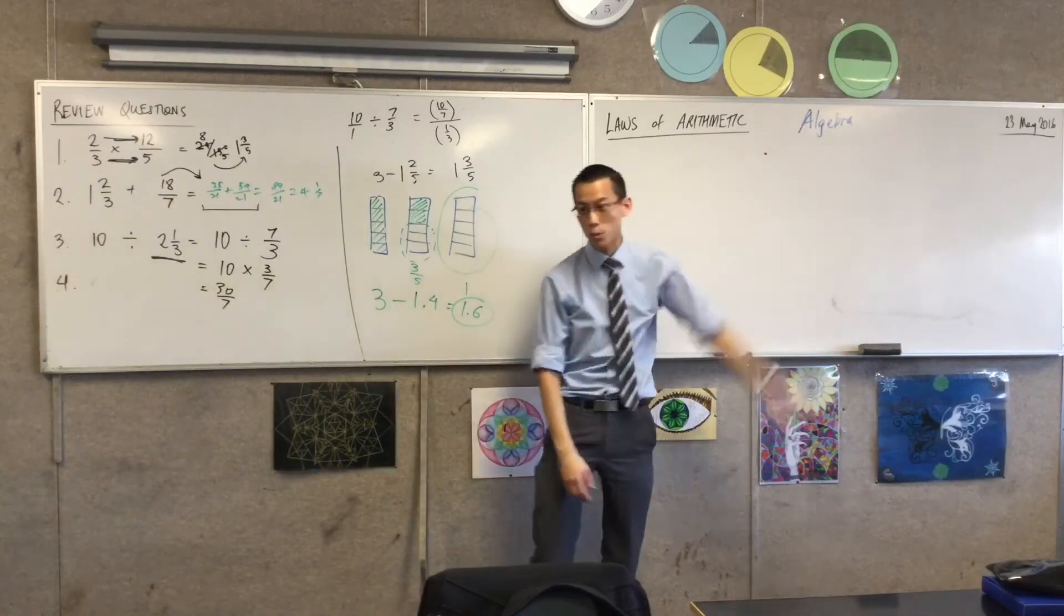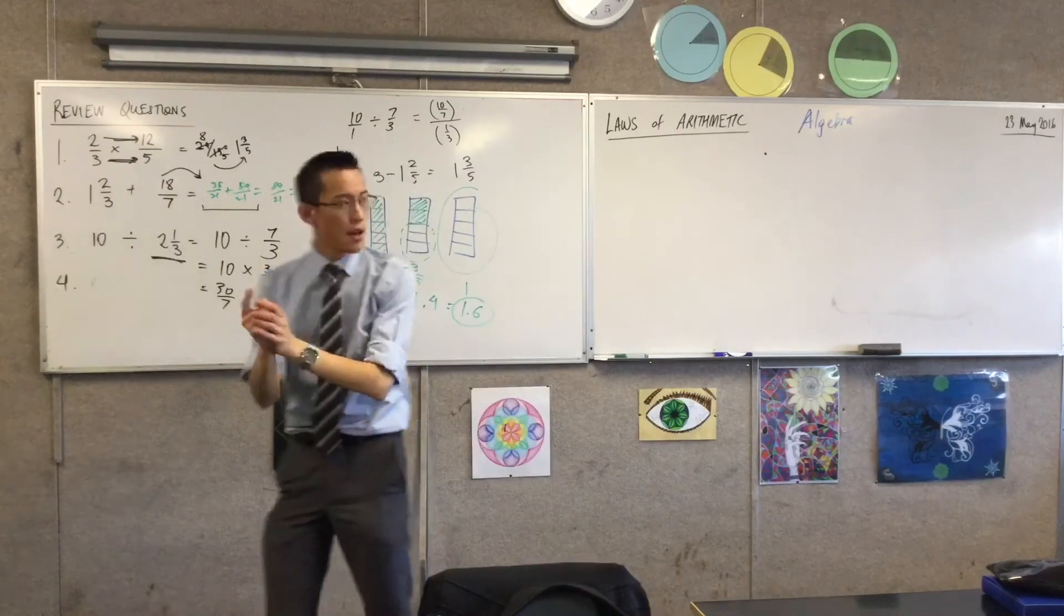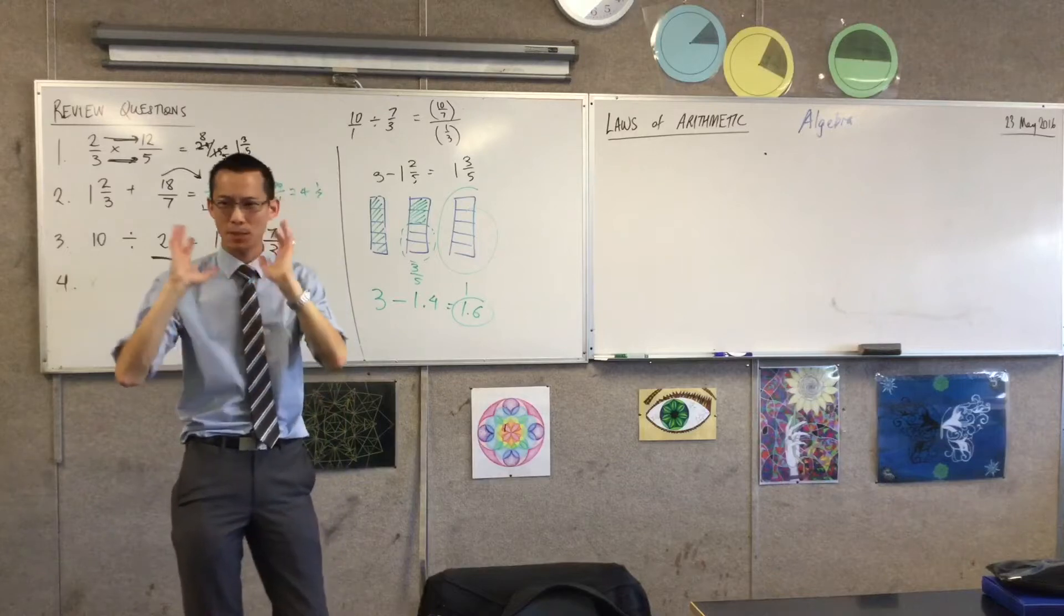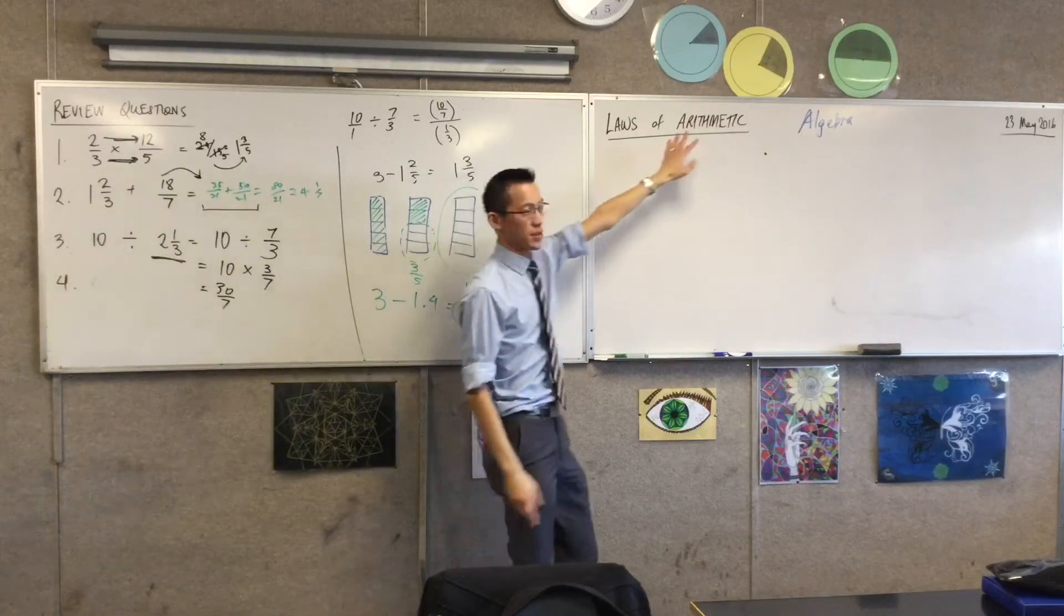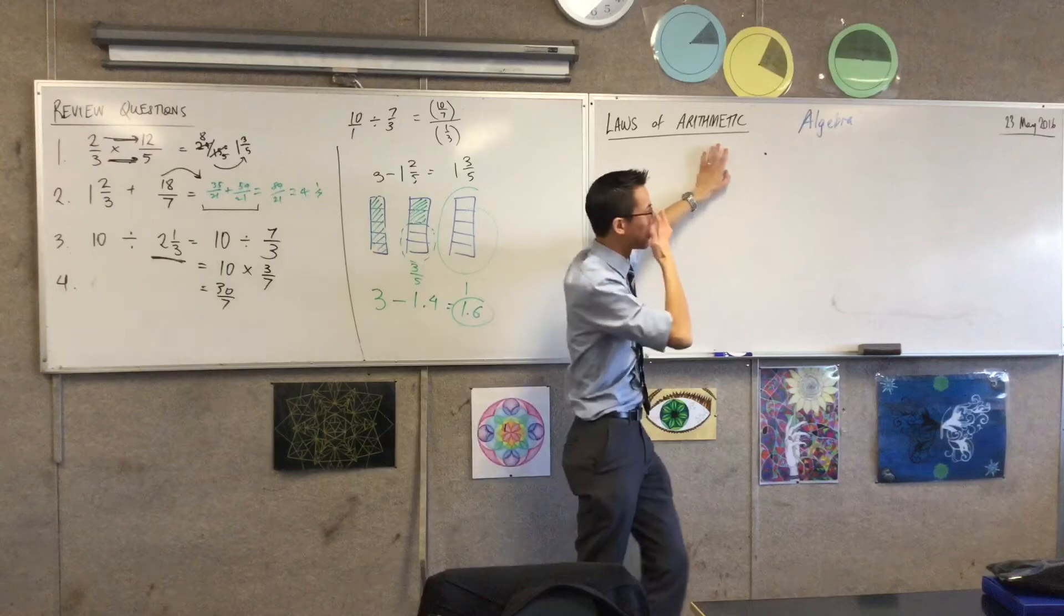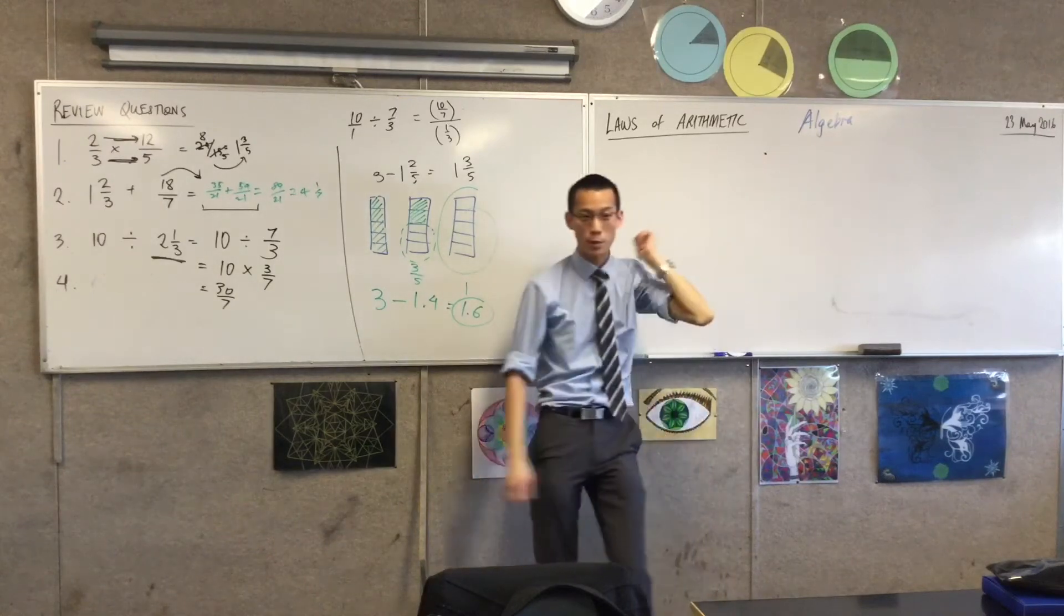Now, we will get to the formal stuff of algebra soon, but algebra is really just about a special way of working with numbers. So we want to know how to work with numbers first, before we get to algebra, and that's what arithmetic is.